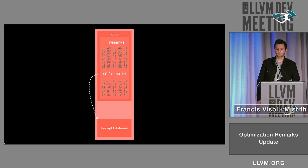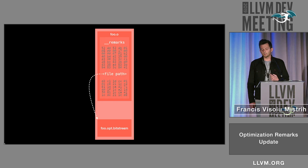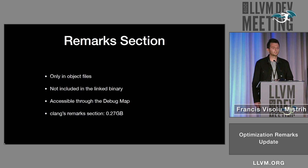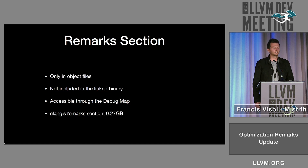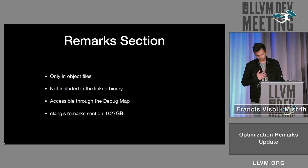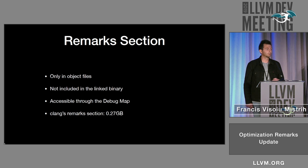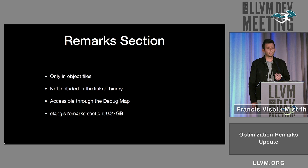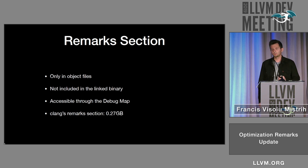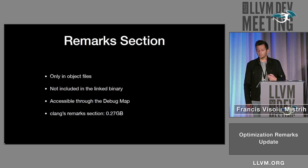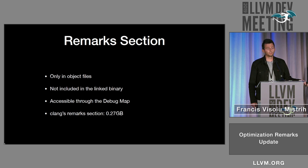Some notes about this section, though. The section is only present in object files, and the linker completely ignores it and is not embedding it in a final linked binary. As DebugInfo works on Darwin platforms, we have a debug map which allows us to retrieve the object files from the linked binary, and we're going to use the same thing to actually retrieve these remarks.